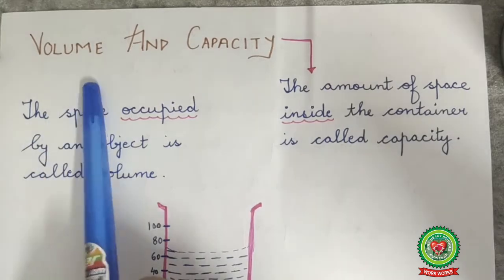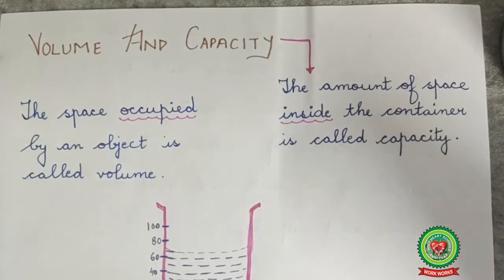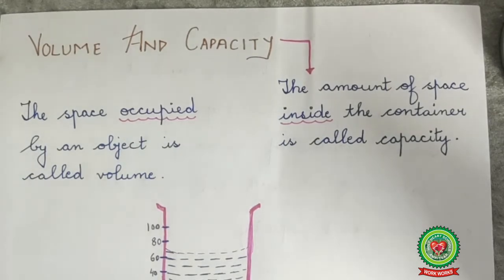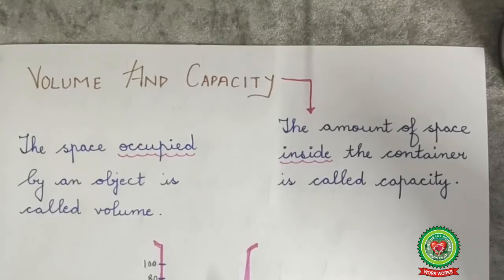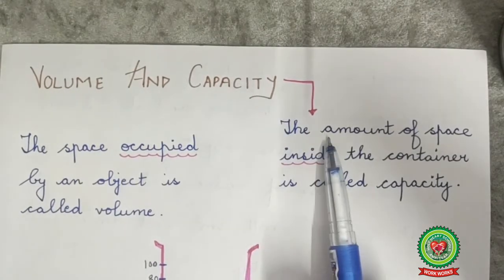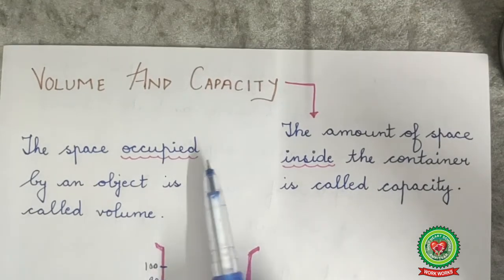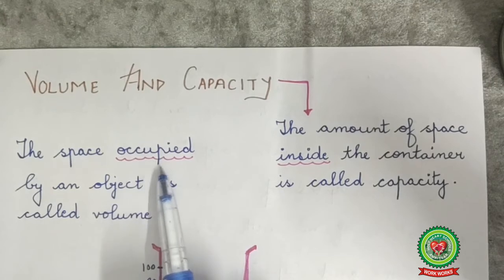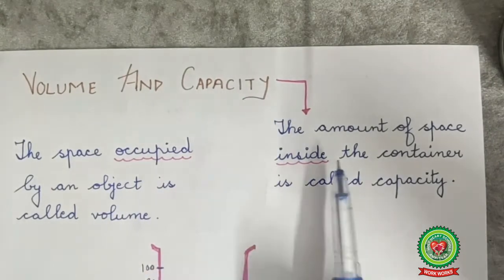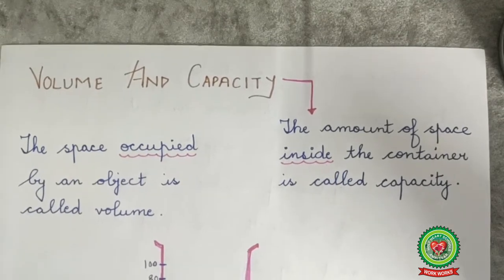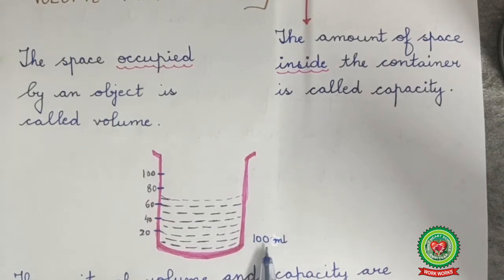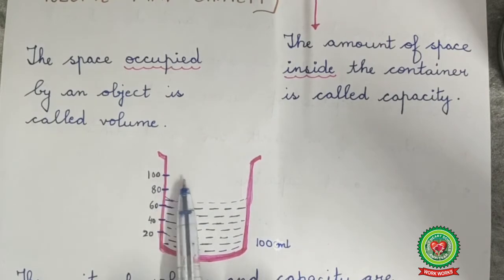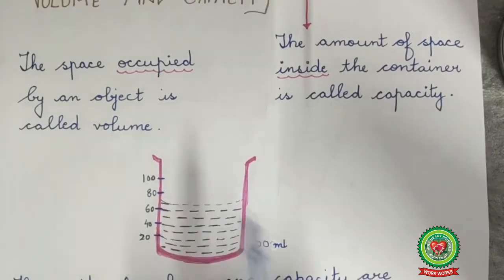Our next topic is volume and capacity. Volume, as discussed earlier, is the space occupied by an object — how much space is being occupied by an object defines its volume. In this beaker, the volume of water is 70 ml. Now, what is capacity? Capacity is defined as the amount of space inside the container. The capacity of this vessel is 100 ml — we can pour water up to 100 ml in it, which is why its capacity is 100 ml.